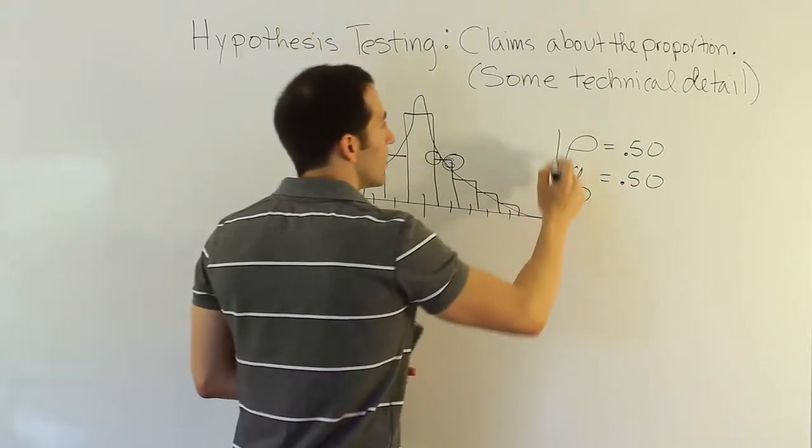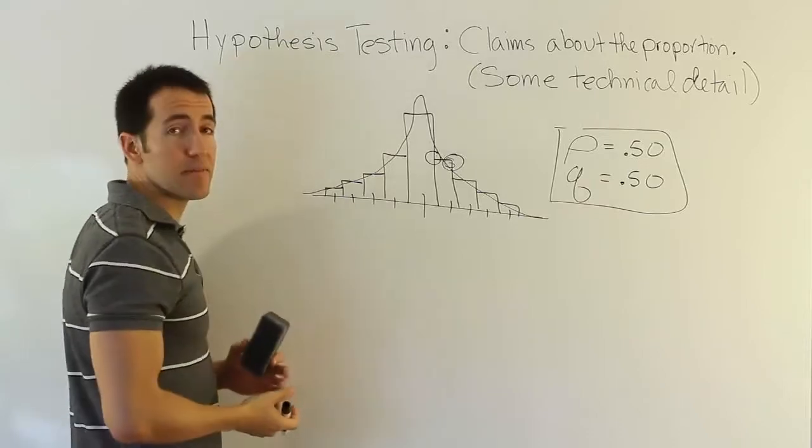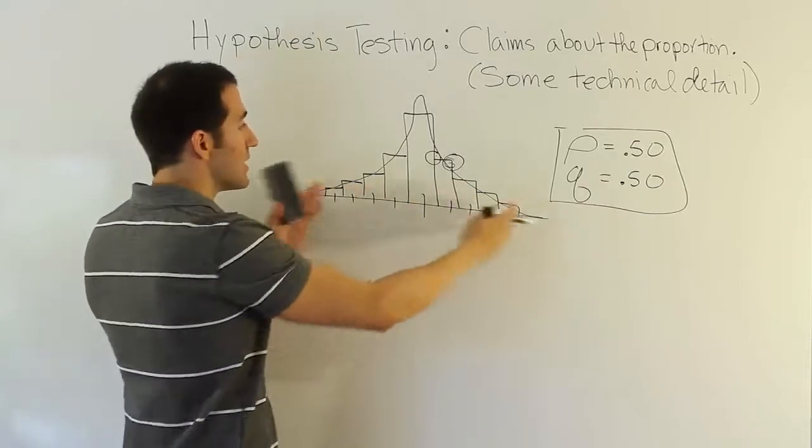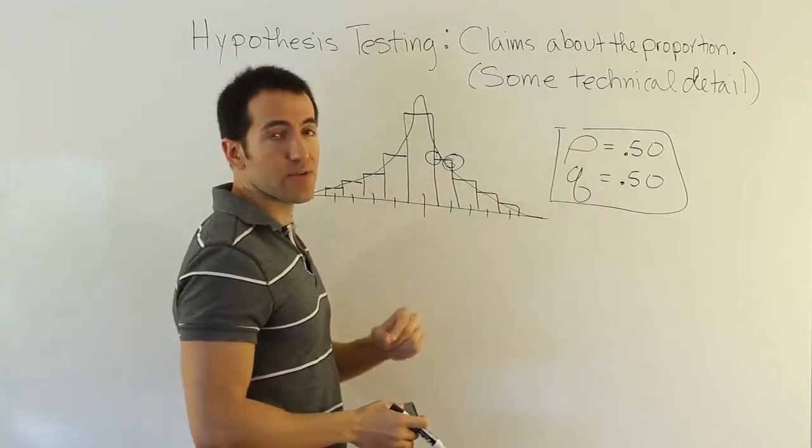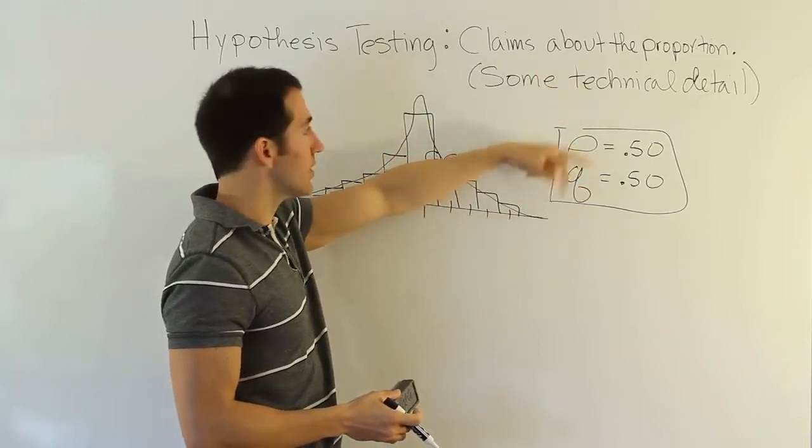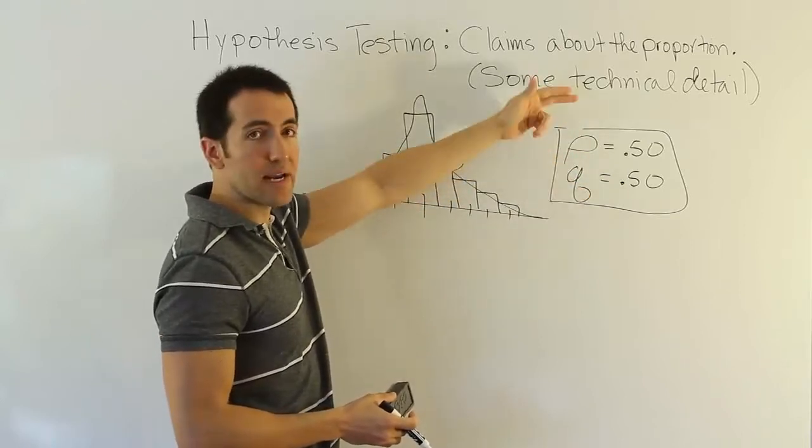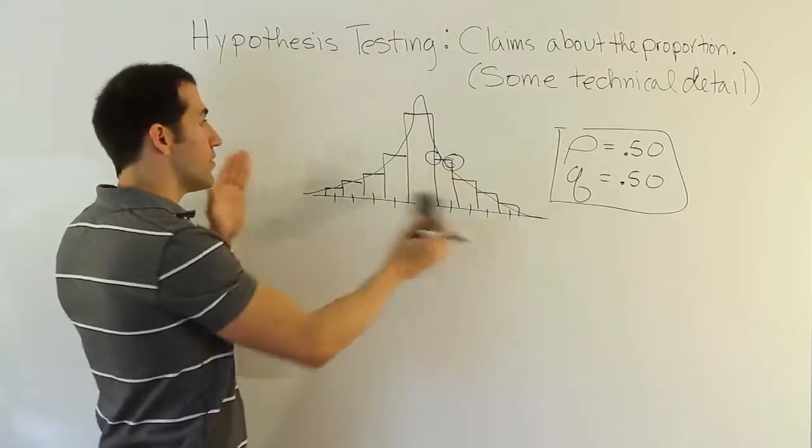But this is under the scenario where P and Q are close to one another, almost the same, the exact same in this case. And because of that, the curve is nice and symmetric. It isn't symmetric any longer when these guys change, when they move away from one another. So if P becomes 60 and Q, therefore, it would be 40, or 70, 30, or 80, 20, or 10, 90. In those scenarios, you end up having a more skewed-looking curve.